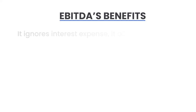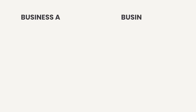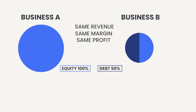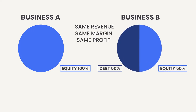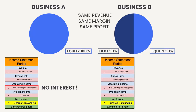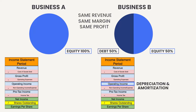EBITDA also has another benefit: since it ignores interest expense, it allows companies with different capital structures to be compared to each other. For example, imagine two functionally identical businesses — same revenue, same margins, same profit — but business A is financed 100% with equity while business B is financed 50% debt and 50% equity. Business A would have no interest expense, while business B would. So business A would show higher net income, even though they're operationally identical. By focusing on EBITDA, we remove the effect of interest expense and can make an apples-to-apples comparison.